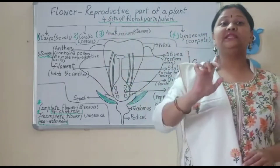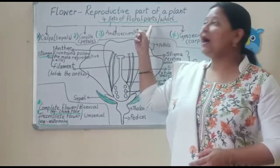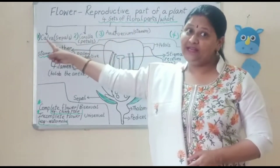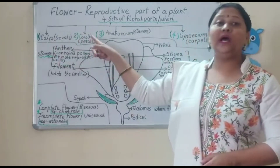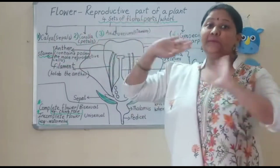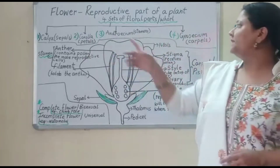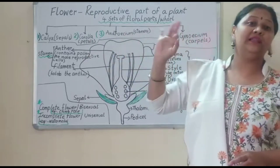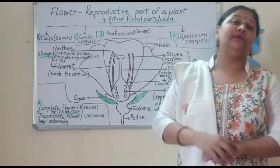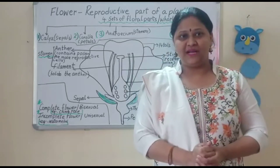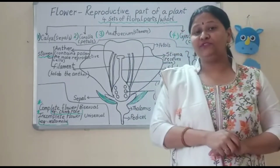So here we have already studied about the four whorls — four sets of floral parts. The calyx: sepals together are known as calyx. Then corolla — remember color, corolla — petals combined are called corolla. The stamens combined are called androecium, which is also the male reproductive part. And the gynoecium, that is carpel, is the female reproductive part. So we have studied about the four main parts of the flower.